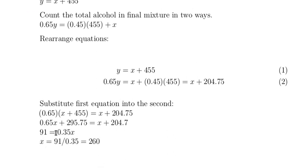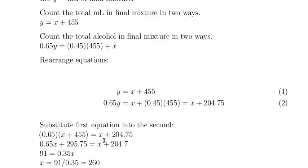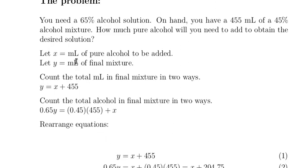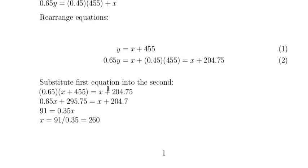Now we divide both sides by 0.35, and that leaves us with x being 260 milliliters, and that's all we needed to answer. We needed to know how many milliliters of pure alcohol to add. We could also find out the total amount in the final mixture, but we just needed x, so we're done.